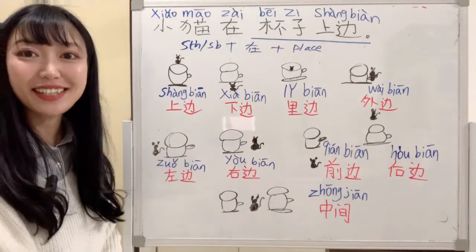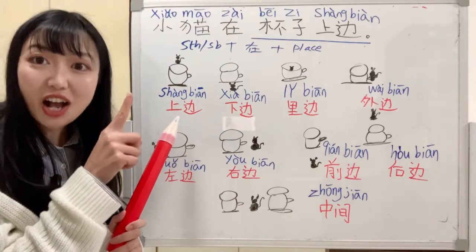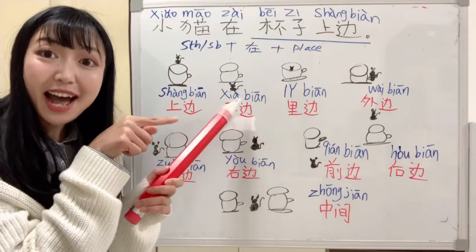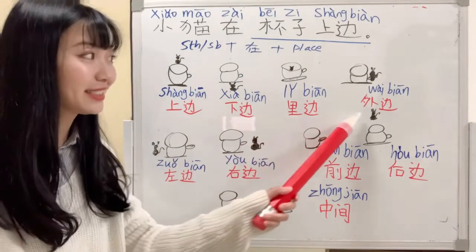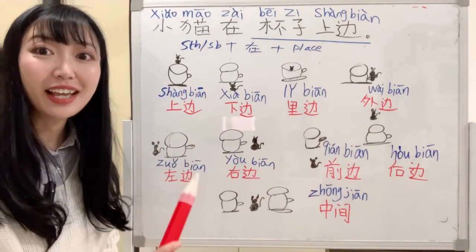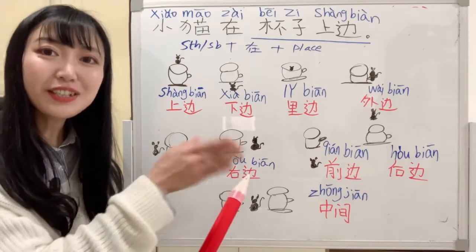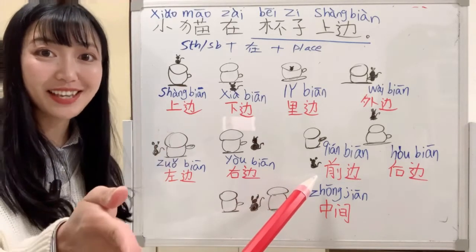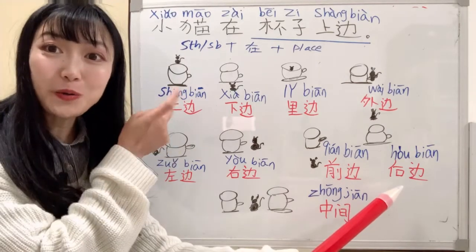Let's read this again together: 上边, 下边, 里边, 外边, 左边, 右边, 前边, 后边.